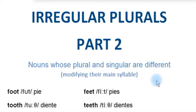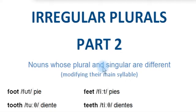Hello, welcome to this new video, and today we are going to take a look at some more irregular plurals. This is part two of those irregular plurals, and this time we're going to take a look at nouns whose plural and singular are different. They basically modify their main syllable, and there are not too many. Here we're going to see the ten most important ones — only ten, so not many things to remember.